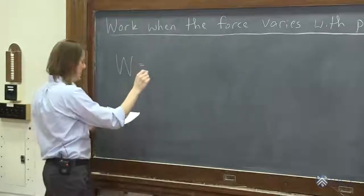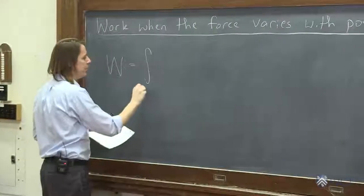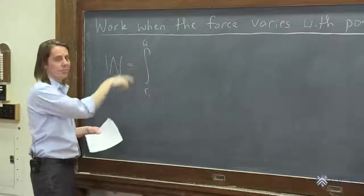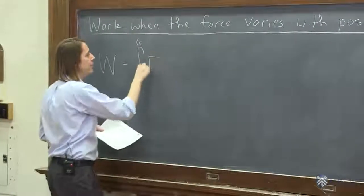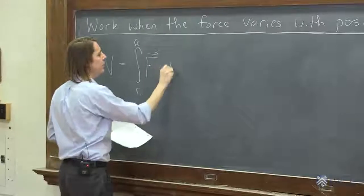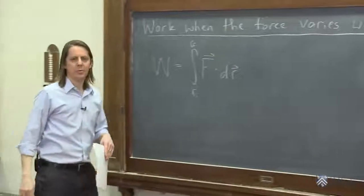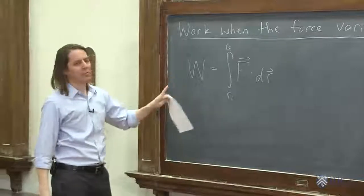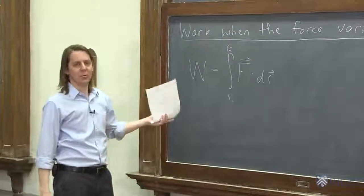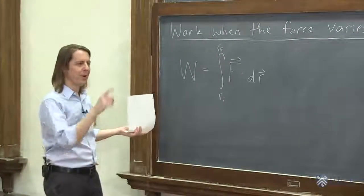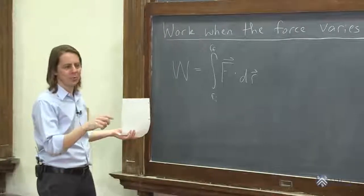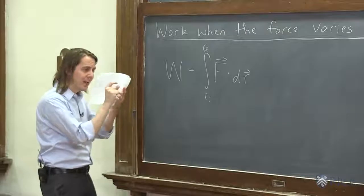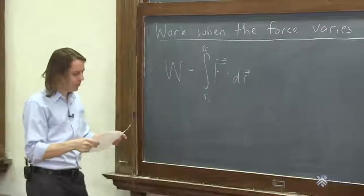So the work is the integral from some initial position to some final position, there's your displacement, initial to final, of the force dotted with some differential change, some differential displacement. This is not a new formula for the work, just a more general formula. The one we had before, F dot delta R displacement, was when the force is constant. If the force varies, you've got to do a bunch of little delta R's and add them up. That's what an integral is, right?